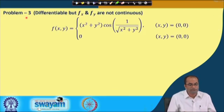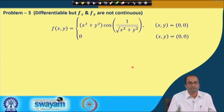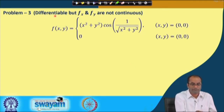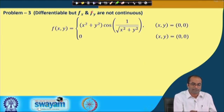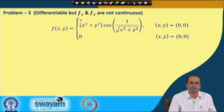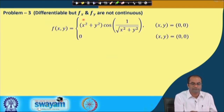Problem 3: We will show that the function is differentiable, but f_x and f_y are not continuous. Recall that continuity of partial derivatives is sufficient for differentiability, but not necessary. A function may be differentiable without having continuous first-order partial derivatives. This example precisely demonstrates that case.